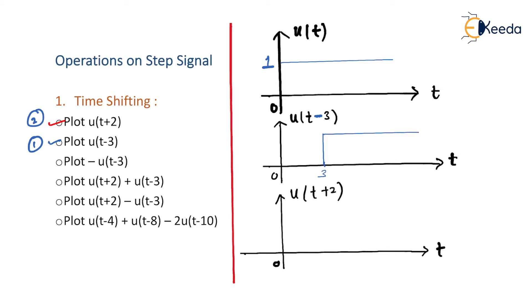Now for u(t+2): when they ask you to add 2, that means advance by 2, which means shift the original signal to the left by 2. So when they give plus 2, we subtract 2 from the original starting point. The lower limit was 0, so 0 minus 2 becomes minus 2. Instead of starting at t=0, this signal starts at t=-2 and continues to infinity with amplitude 1.